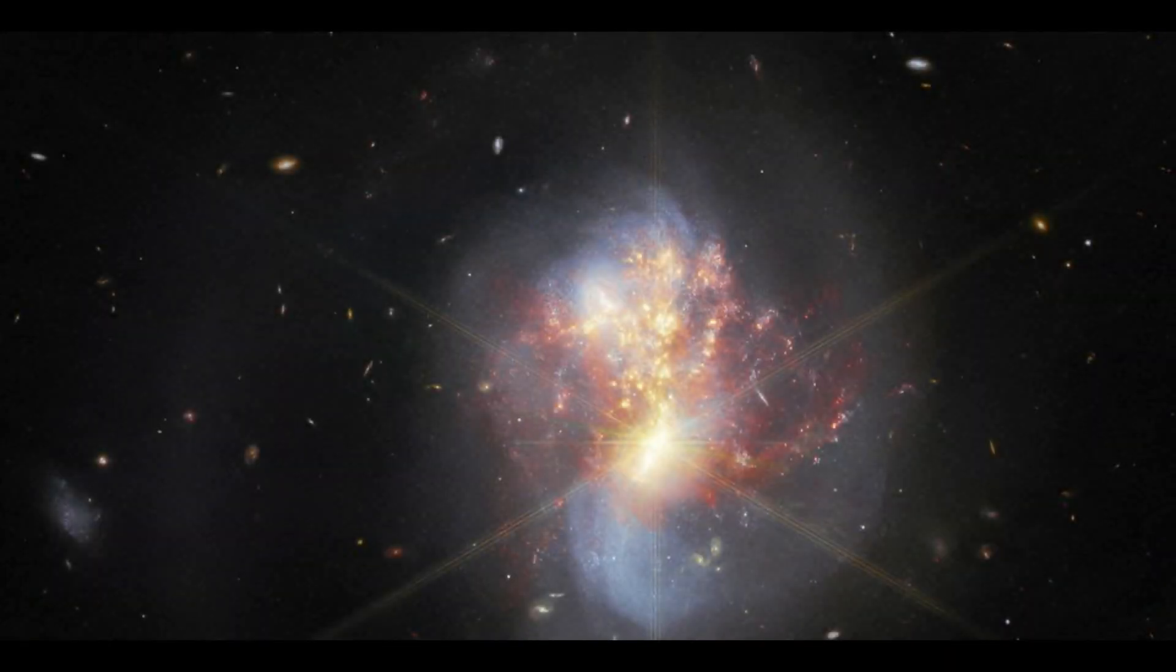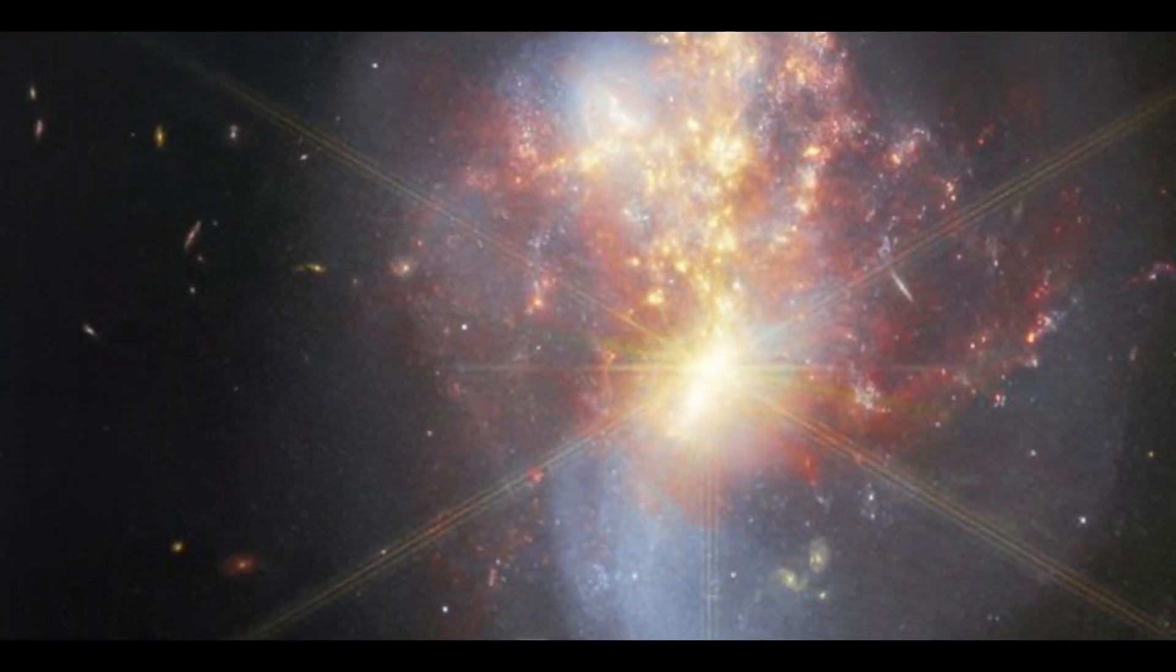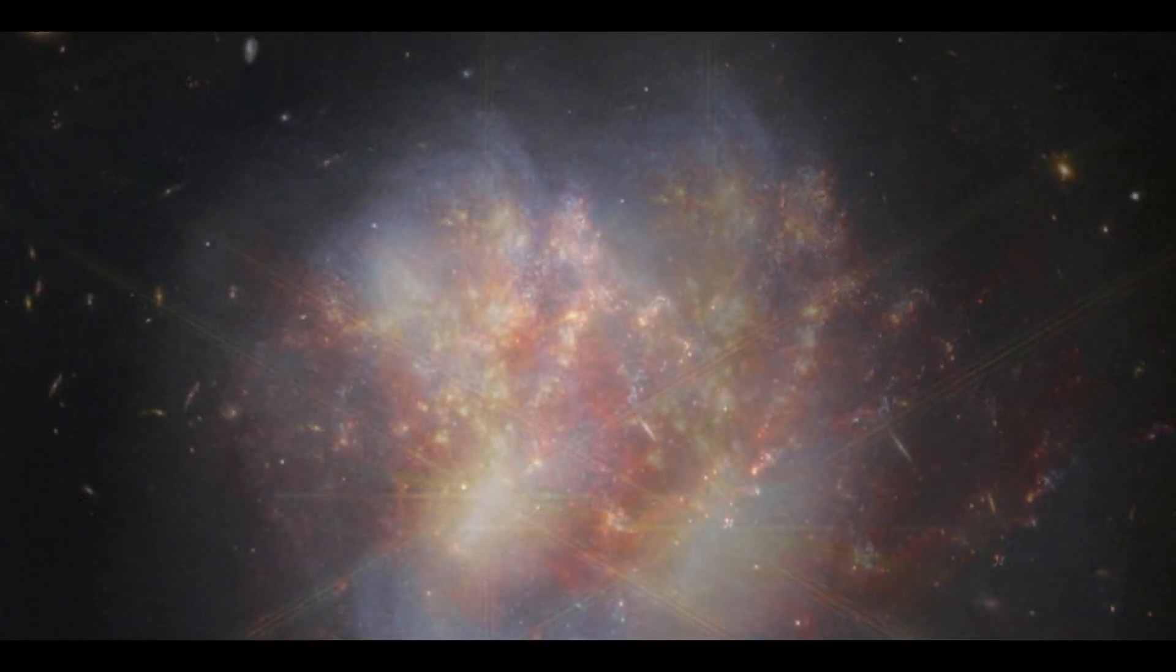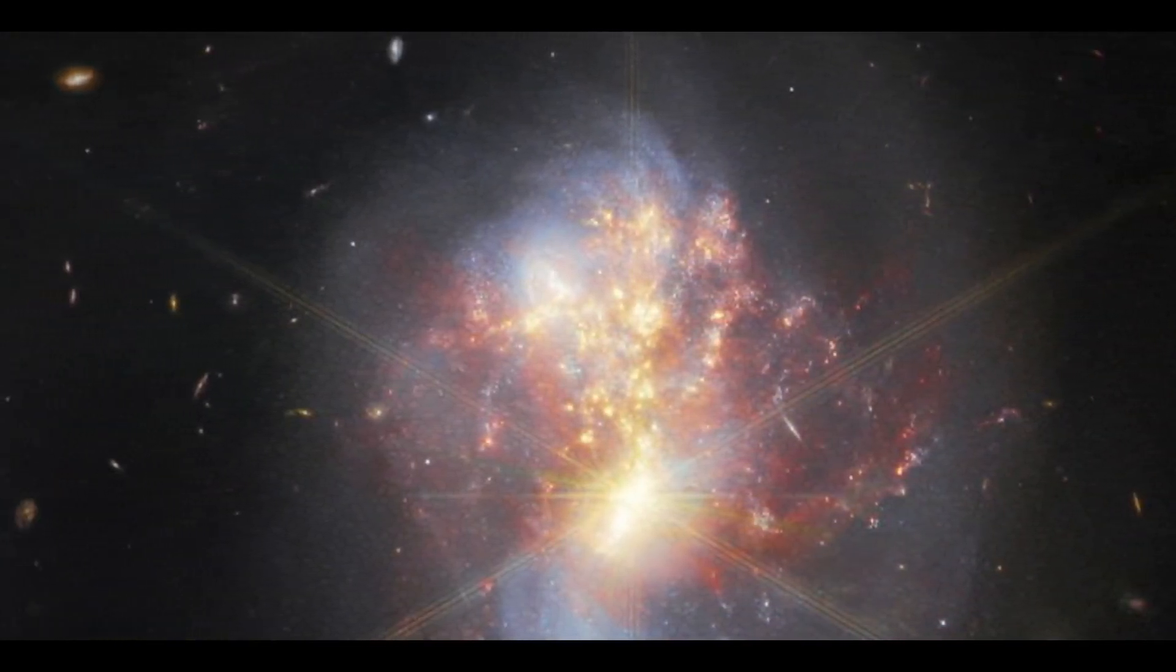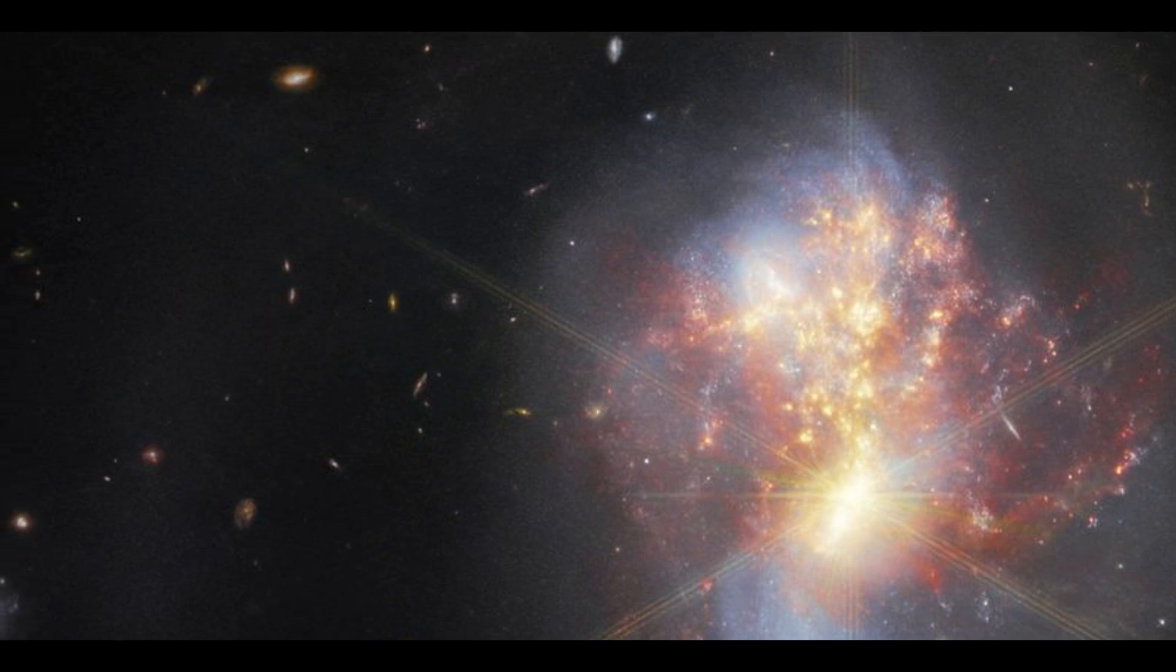The two galaxies in this image are located in the constellation Cetus, approximately 270 million light-years from Earth. Astronomers predict that the merger may potentially result in the formation of a supermassive black hole, which is not seen in this image.